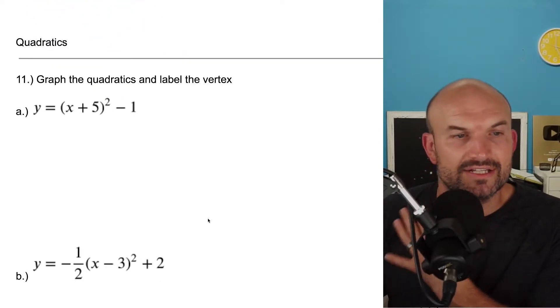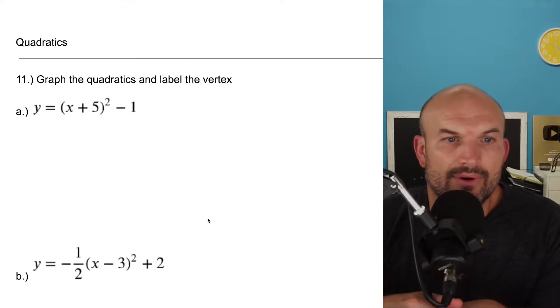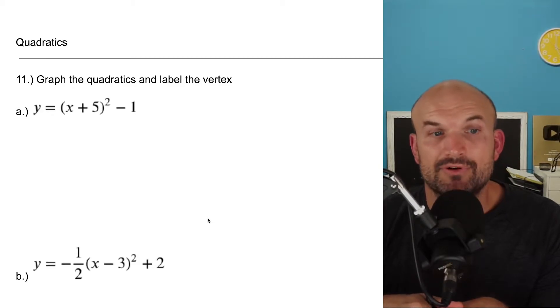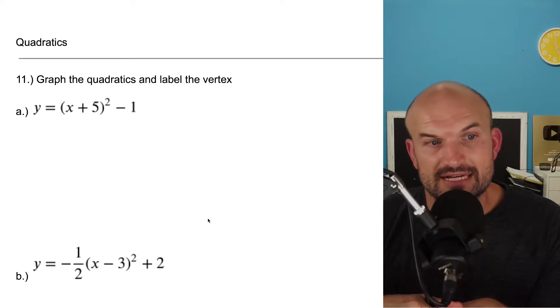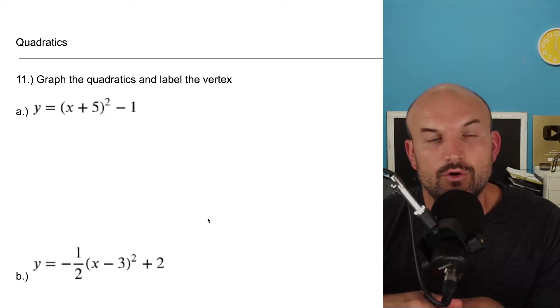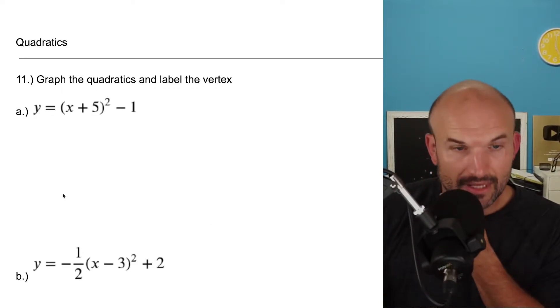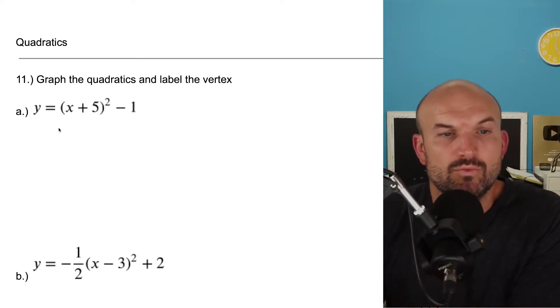All right, so now let's move on to quadratics. We want to graph the quadratics and label the vertex. In this case, we have y equals a times x plus five, quantity squared, minus one.